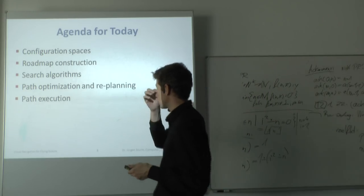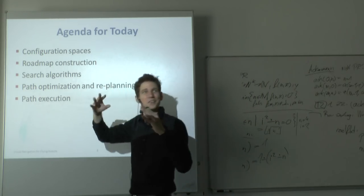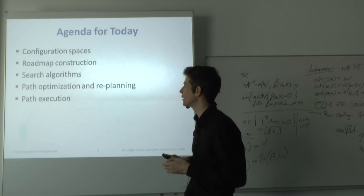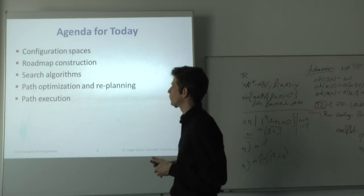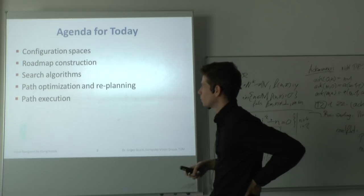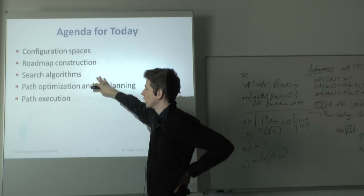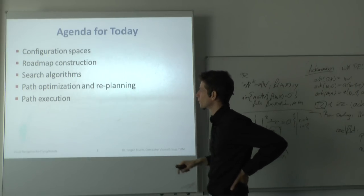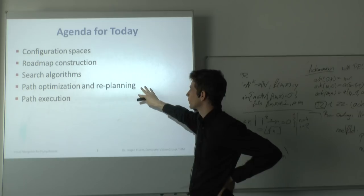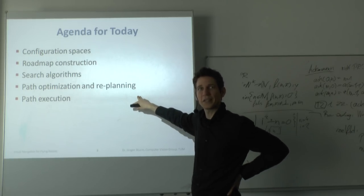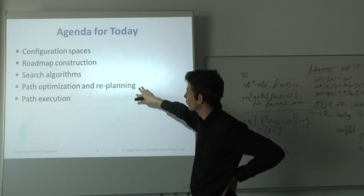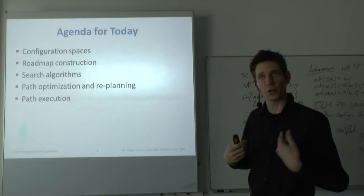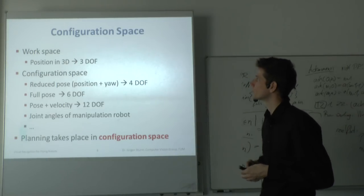Today we will look at: first, configuration spaces — the concept used in motion planning for representing space. Then roadmaps and random trees. We'll also cover search algorithms, including some more advanced ones. Finally, we'll look at path optimization and re-planning — how to re-plan efficiently when running into obstacles — and path execution, which brings us to the local planner or path tracker.